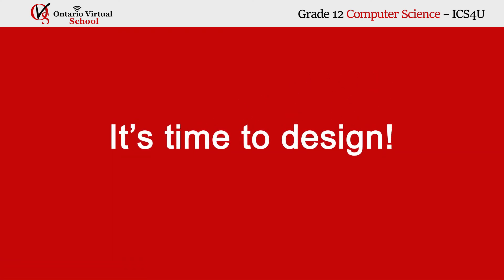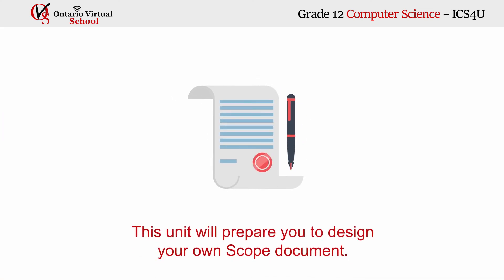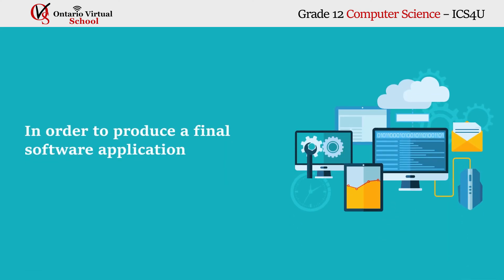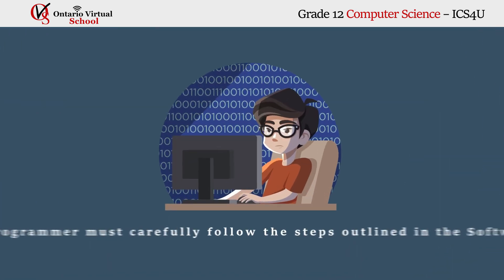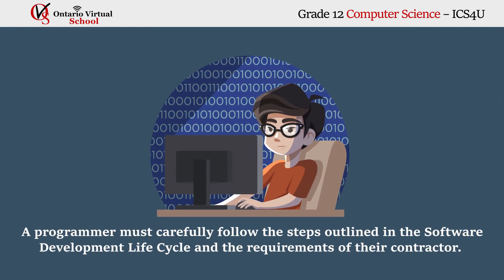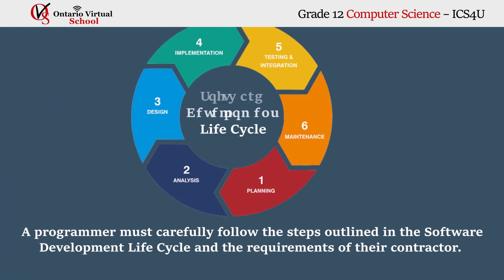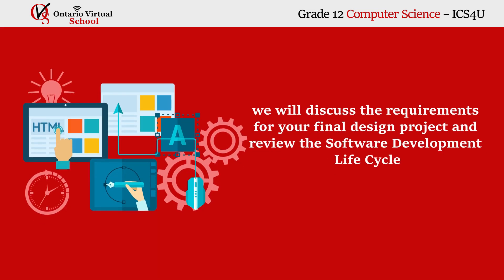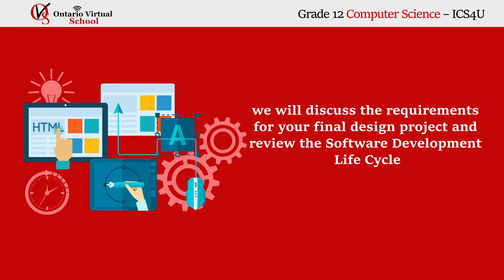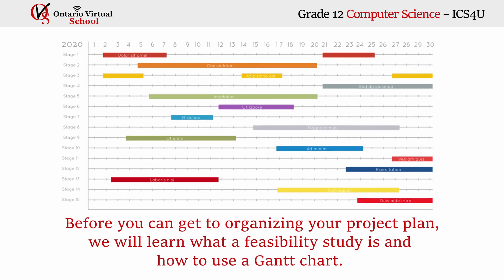Unit 4: Software Life Cycle. It's time to design! This unit will prepare you to design your own scope document in order to produce a final software application. A programmer must carefully follow the steps outlined in the software development lifecycle and the requirements of their contractor. In this final unit, we will discuss the requirements for your final design project and review the software development lifecycle. Before you can get to organizing your project plan, we will learn what a feasibility study is and how to use a Gantt chart.